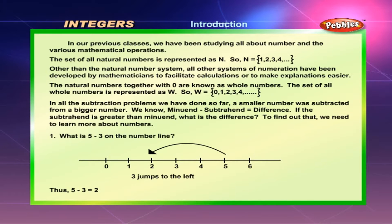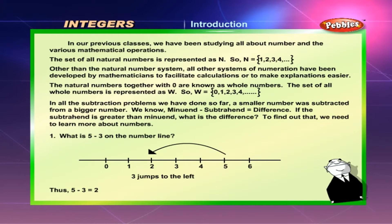The natural numbers together with 0 are known as whole numbers. The set of whole numbers is represented as W, so W is equal to 0, 1, 2, 3, 4 and so on.